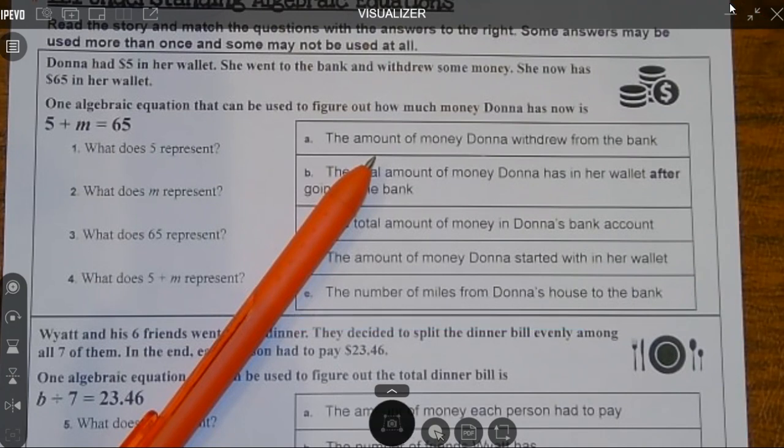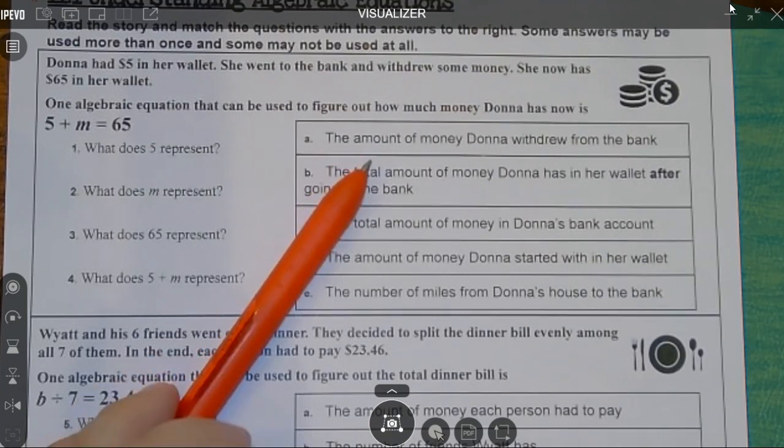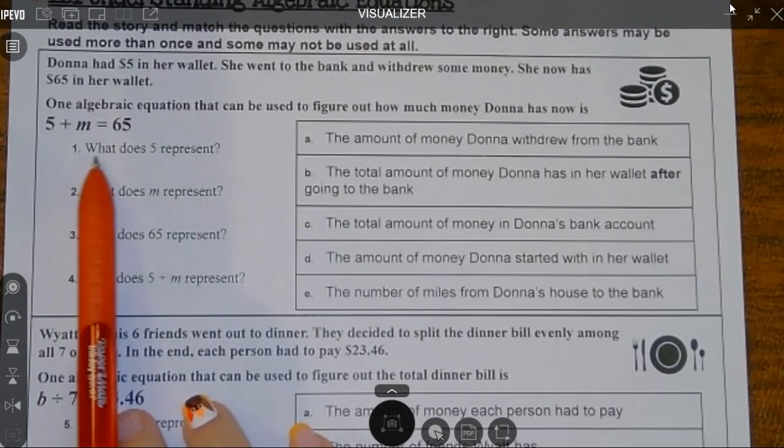So she took some money out of the bank. Do we know how much money she took out? No, they didn't tell us. How much did she have to start with? She had five and now she has a total of 65 in her wallet. So to help us figure out how much she actually withdrew from the bank, we would use this equation: 5 + m = 65.